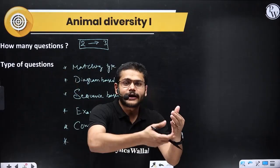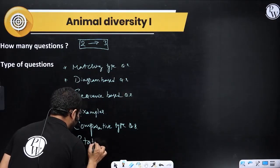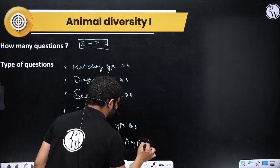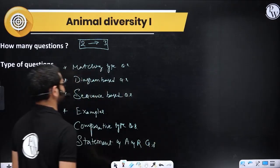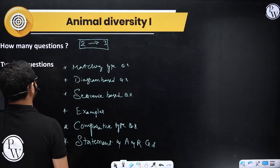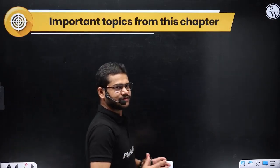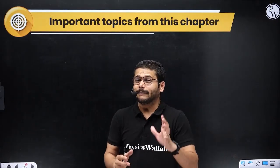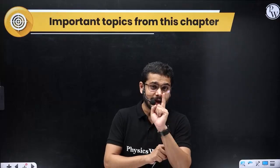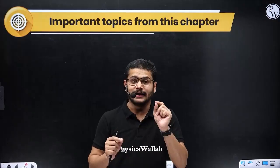Statement-based questions, assertion-reason questions come from this topic. So in the exam, different types of questions from Animal Diversity 1 will appear. Let me tell you about this topic - how to score marks, and some tips to score well.